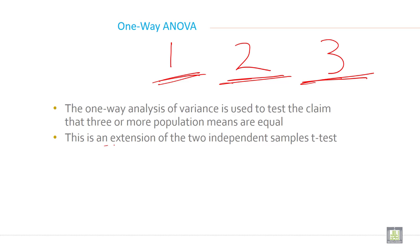This is an extension of the two independent sample t-test. If you have two groups, then you are applying two independent sample t-test. But when if you have more than two groups and you want to make comparison, then you can apply analysis of variance one way ANOVA.